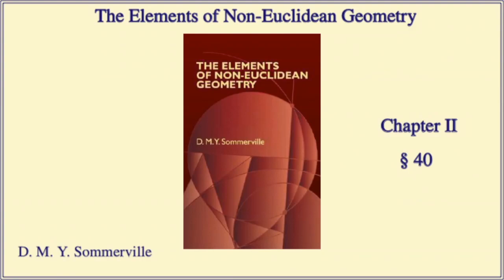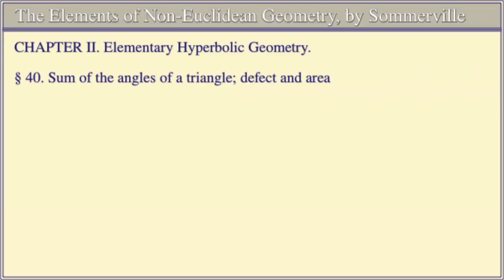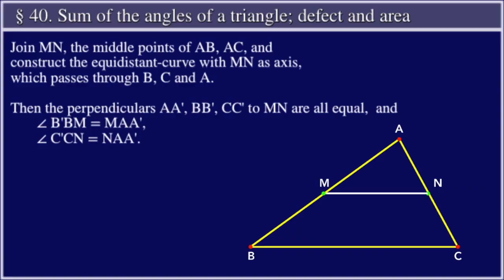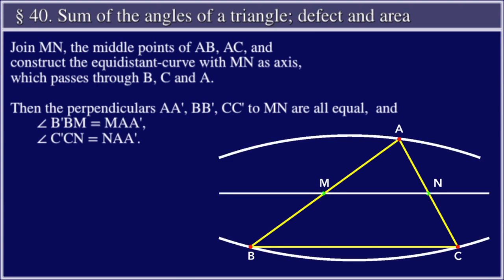The Elements of Non-Euclidean Geometry by D.M.Y. Somerville. Chapter Two: Elementary Hyperbolic Geometry. Section 40: Sum of the angles of a triangle, defect and area. Join MN, the middle points of AB, AC, and construct the equidistant curve with MN as axis which passes through B, C, and A.